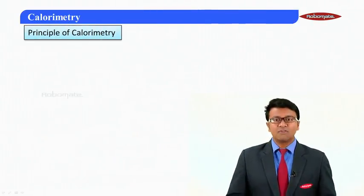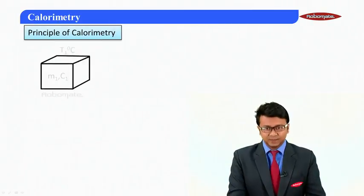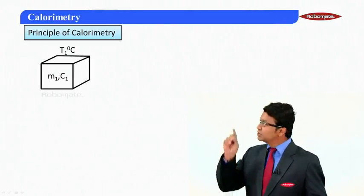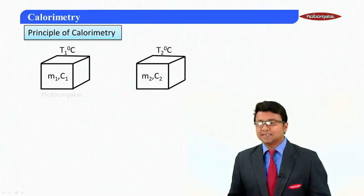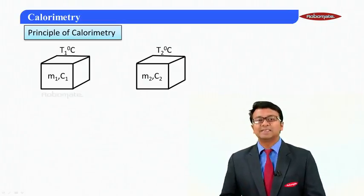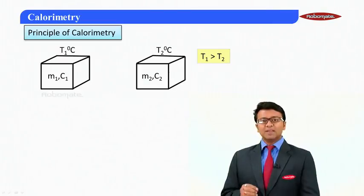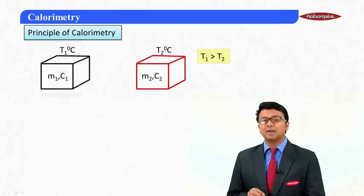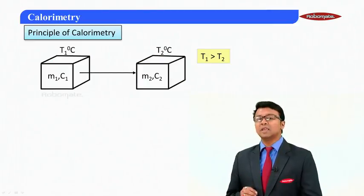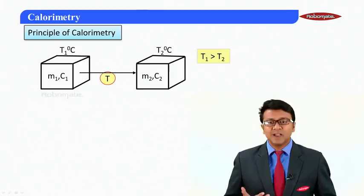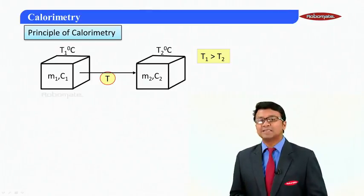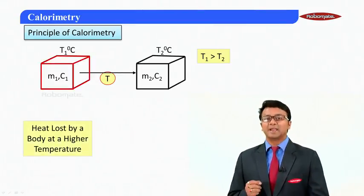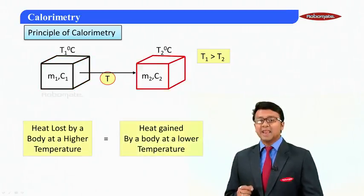Now let's look at the basic principle of calorimetry. We have a block with mass m1, specific heat capacity c1, at temperature t1, and another block with mass m2, specific heat capacity c2, at temperature t2, where t1 is greater than t2. Heat flows from the higher temperature body to the lower temperature body. After some time, thermal equilibrium is reached where the temperature of both bodies becomes equal.